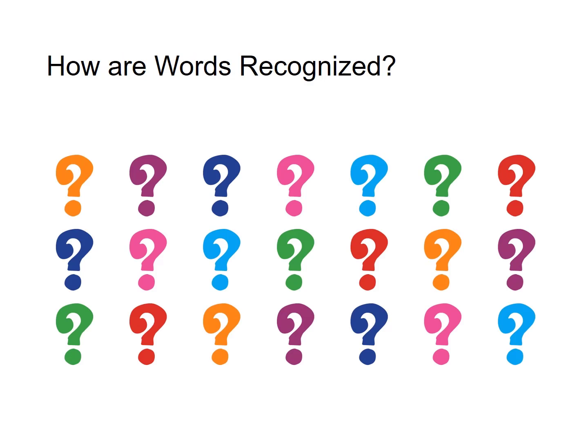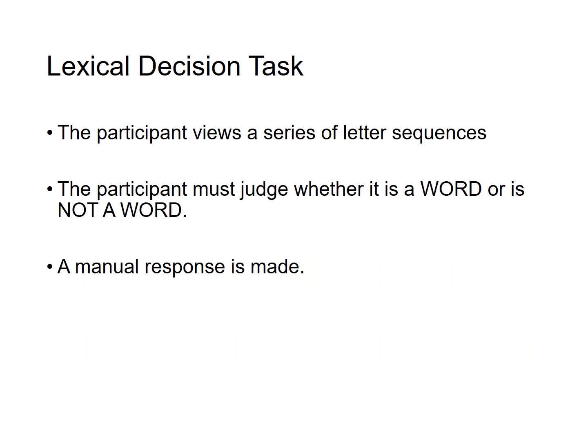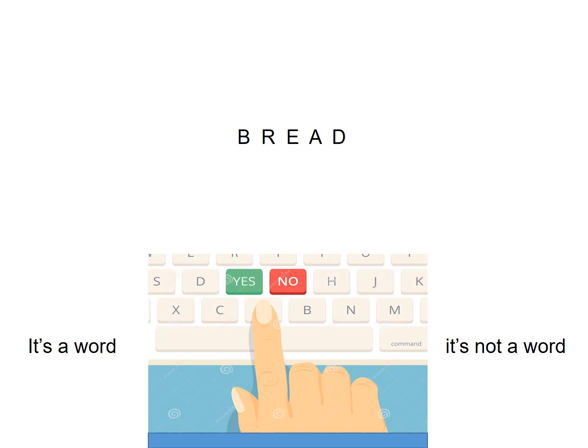There have now been tens of thousands of experiments conducted to try to understand how individual words are recognized visually. A popular task used to understand word perception is the lexical decision task. In such a task, a participant will view a series of letter sequences and be asked to judge: is that letter combination a word that you know, or is it a non-word? They then make a manual response by pressing a key on a keyboard. For example, you might see the letter sequence B-R-E-A-D and be asked to respond quickly and accurately — is it a word? Press the left key. If it's not a word, press the right key.